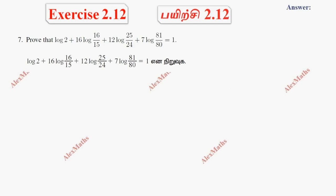Hi students, this is Alex here. Exercise 2.12, question number 7. Prove that log 2 plus 16 log(16/15) plus 12 log(25/24) plus 7 log(81/80) equals 1.